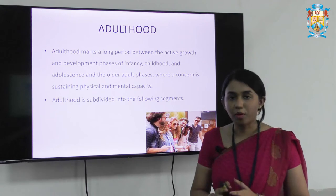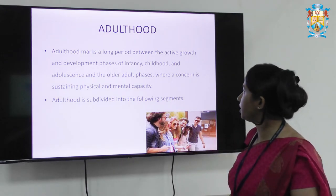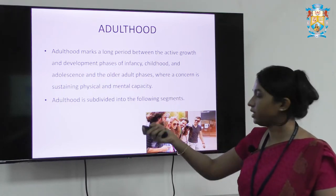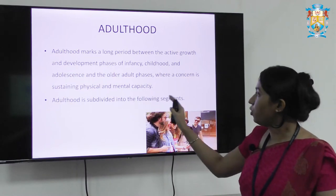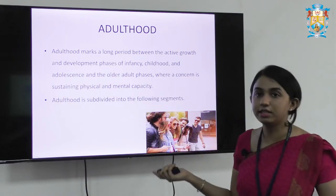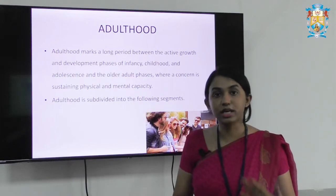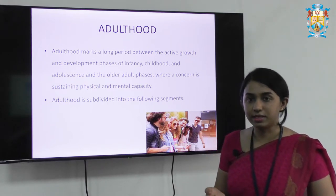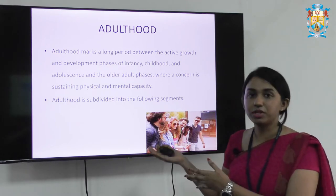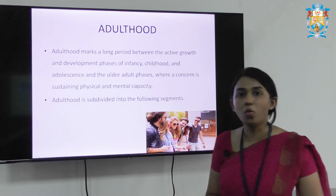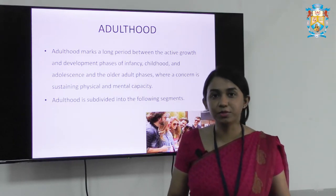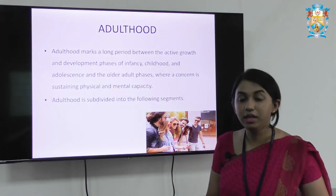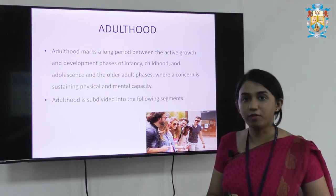Adulthood marks the longest period between active growth and development. When we compare it to infancy, childhood, adolescence, or the older adult phase, the concern here is sustaining physical and mental capacity. When a person is called an adult, it means that maturation of all the organs has taken place. The organs are at their peak capacity in working, and we have to ensure they are functioning properly — just like checking a car's engine — through proper diet and lifestyle.